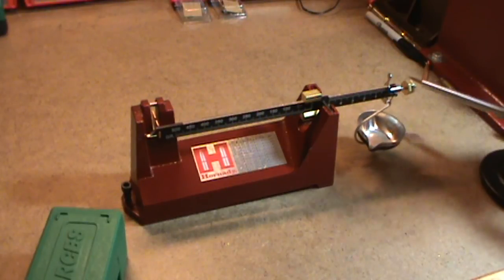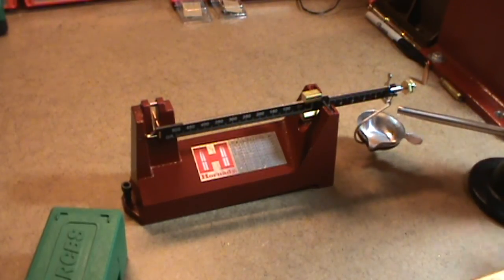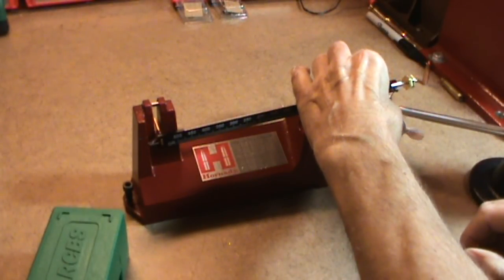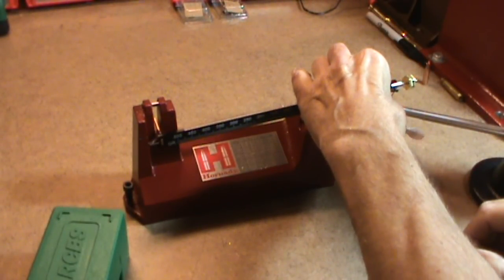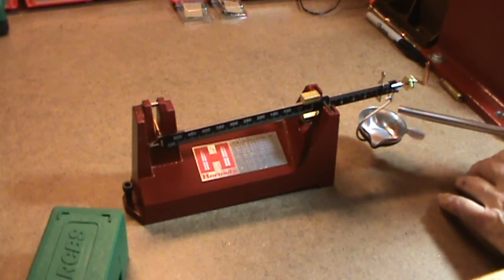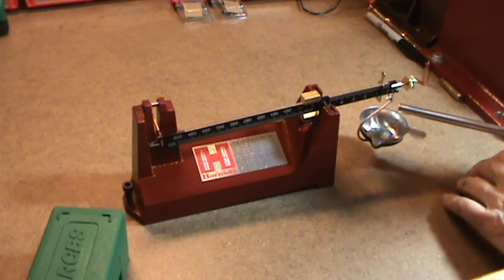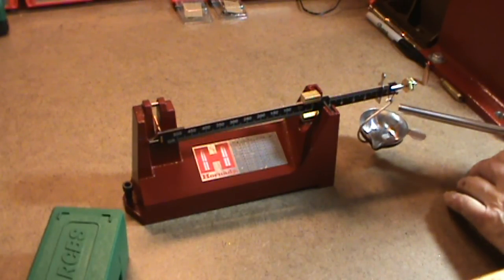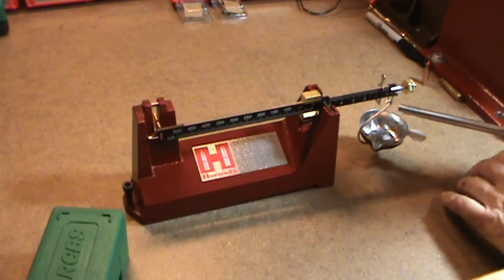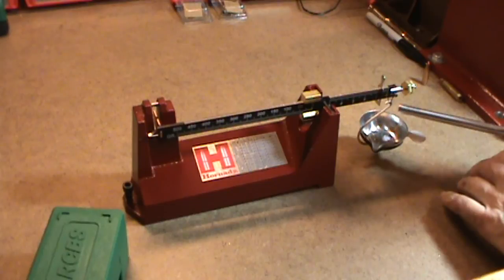Now, one more test I want to do is I want to trickle charge. Let's say 5.6 grains. I think that's the weight that we were using in the original video. So, I'm going to slowly trickle using my Hornady Quick Trickle. You can see it's starting to come up there. I'm just going to slowly trickle until I get up to the center there.